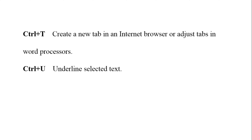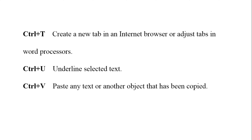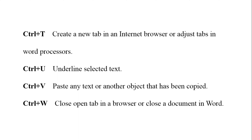Next is ctrl plus U — U stands for underline — so it underlines the selected text. If we have to underline some text in our document, just press ctrl plus U. The next one is ctrl plus V, which everyone knows — it is used to paste any text or object that has been copied.